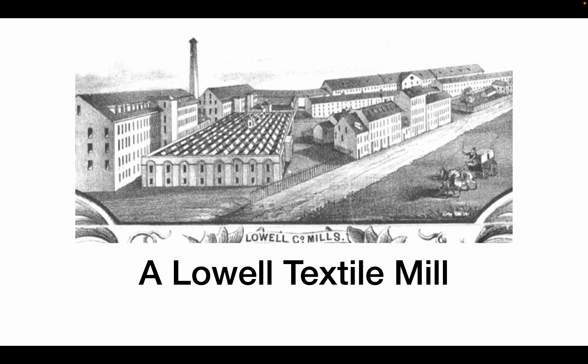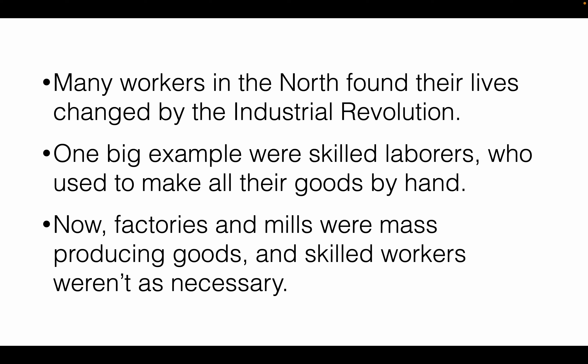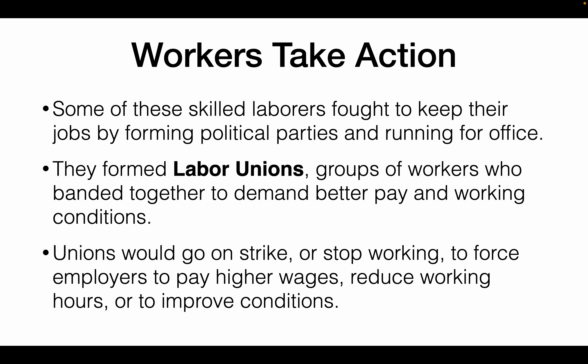Here's what a Lowell mill looks like, along with the city growing up around it. Many workers in the north found their lives deeply changed by the Industrial Revolution — they started living life on the clock, not on the sun. One big example is skilled laborers, people who used to make everything by hand. Now factories were taking away those skilled labor jobs, meaning skilled workers were not as necessary.